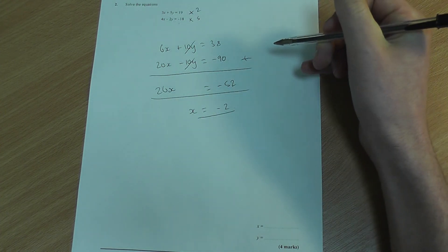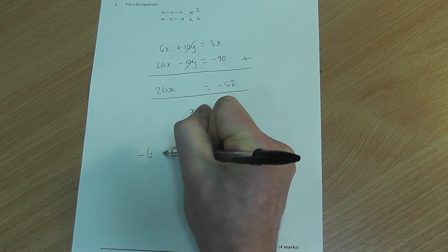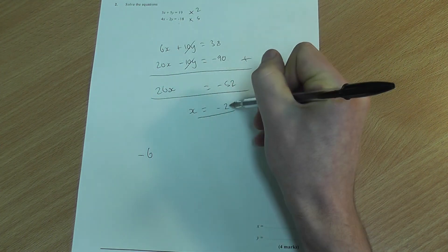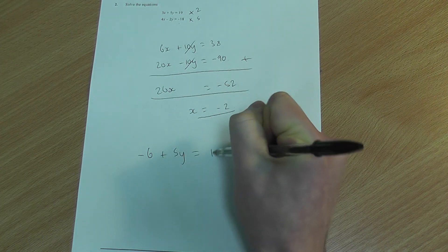So, I'm going to use one of the equations again. I'm going to use the top one and I substitute it in minus 6 because 3x, x being minus 2 becomes minus 6, plus 5y equals 19.